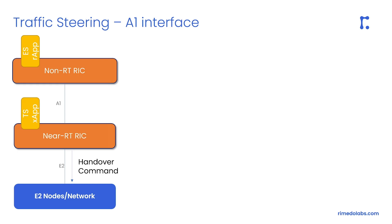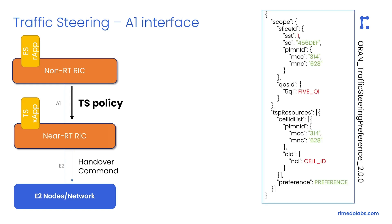The energy saving RAP interacts with the traffic steering XApp via A1 policy, sending traffic steering preferences policies in version 2.0.0. In this policy, we can define scope by indicating a slice and traffic type by a five-QI value, and preferences by a list of cells and one of the predefined preference values.